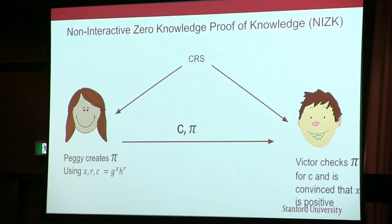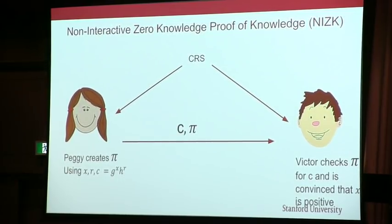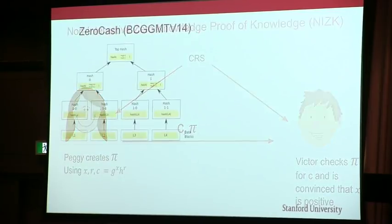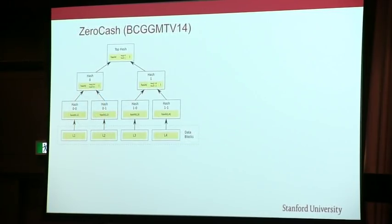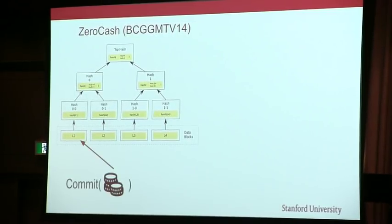It's not clear who would do this interaction, so we really need non-interactive proofs, where Peggy can just write down the proof and convince Victor. This is also what is being used in Zcash, and here the statement that is being proved is a lot more complicated.